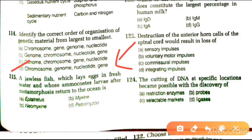Next question: a jawless fish that lays eggs in fresh water and whose ammocoetes larvae after metamorphosis return to the ocean. The correct option refers to this organism. They take eggs in fresh water, but the larvae, the ammocoetes, reach metamorphosis in the ocean.